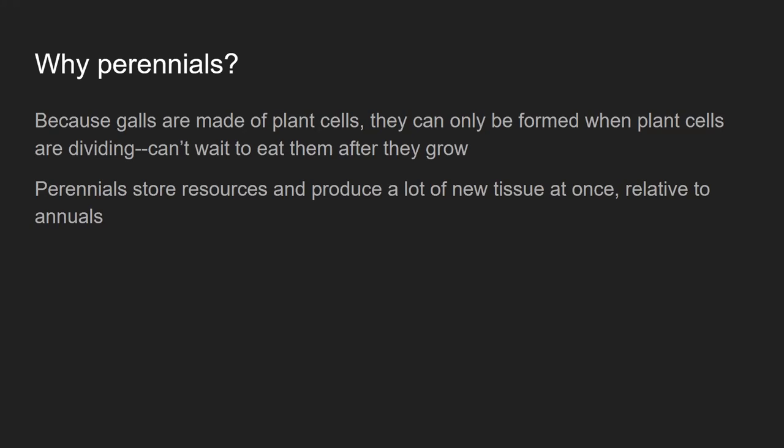That creates a much bigger, faster flux of resources for the gall-inducer to take advantage of, to rapidly create this new and relatively expensive organ — the whole point being to feed and protect the inducer with more resource-dense tissue than the plant would normally create. If you think about a dandelion, it doesn't have any stored resources in the spring — it's bootstrapping itself with its own initial photosynthesis, so there isn't a big pool of stored resources to take advantage of.